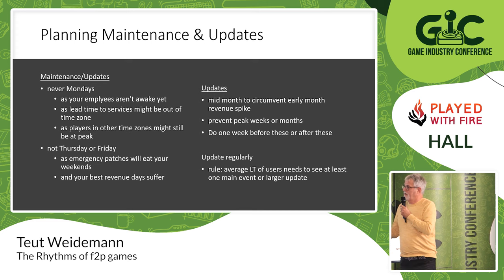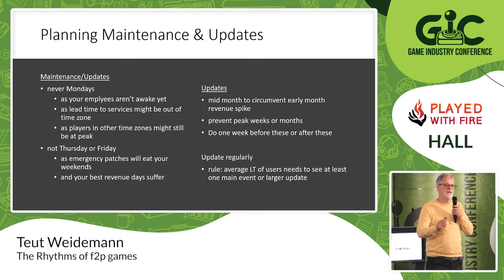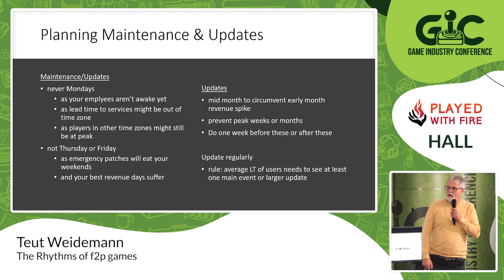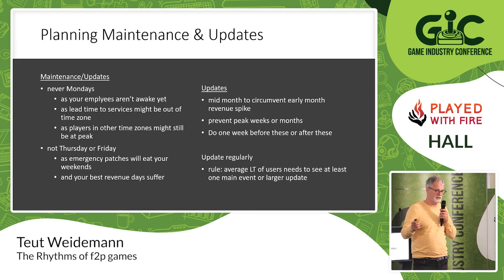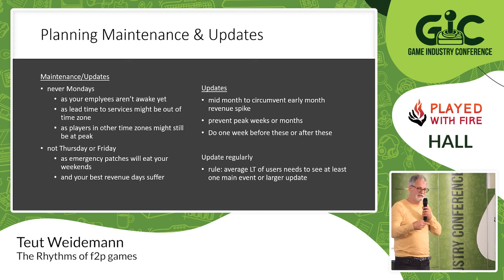You should prevent updating or maintaining your game in the peak weeks or months. If December and January are so important, ship your update in November, not in December and January. It can ruin everything — 'oh, we broke the game, we need three days to fix it' is not good. Update regularly — the average lifetime of users in your game should see at least one main event or one update. When users see that, they know you care about the game. They see something new, they see the service you're providing. That's a very important retention method.